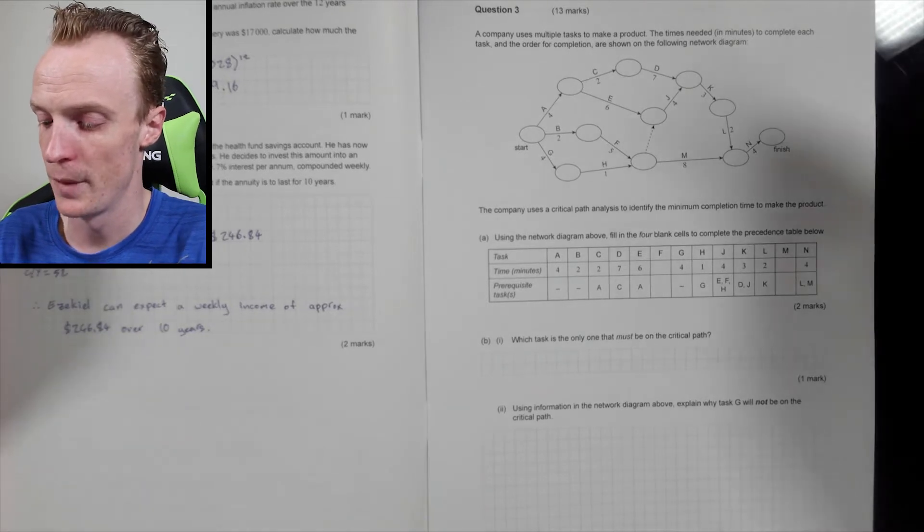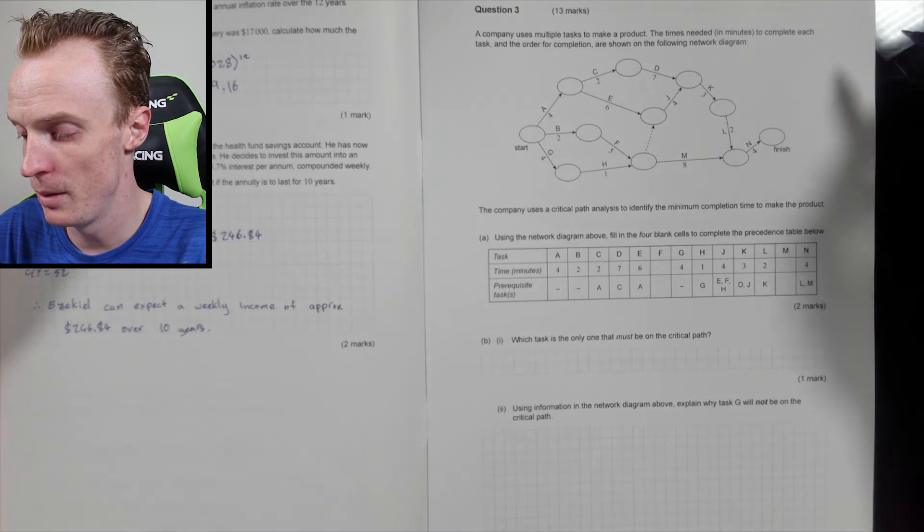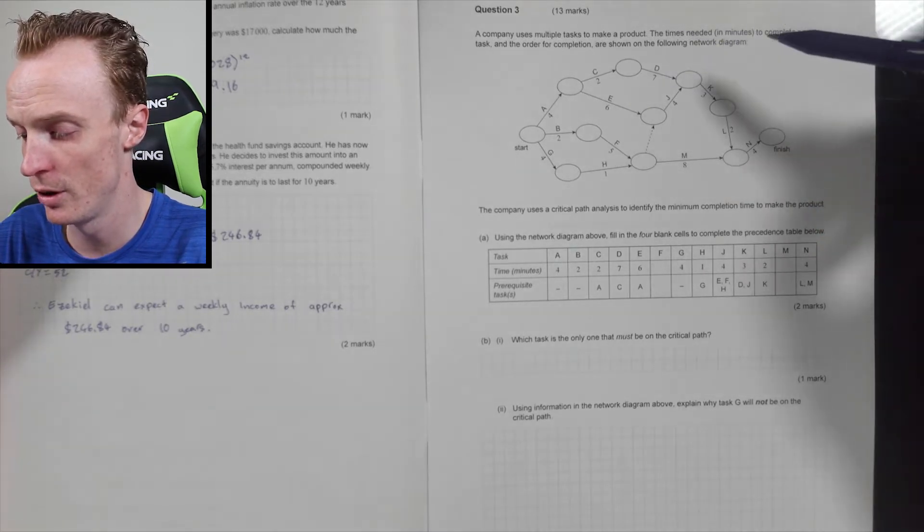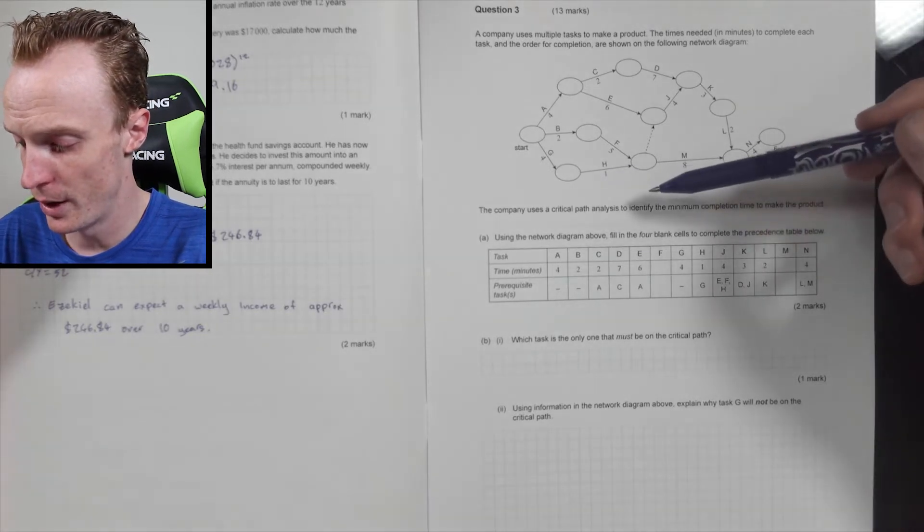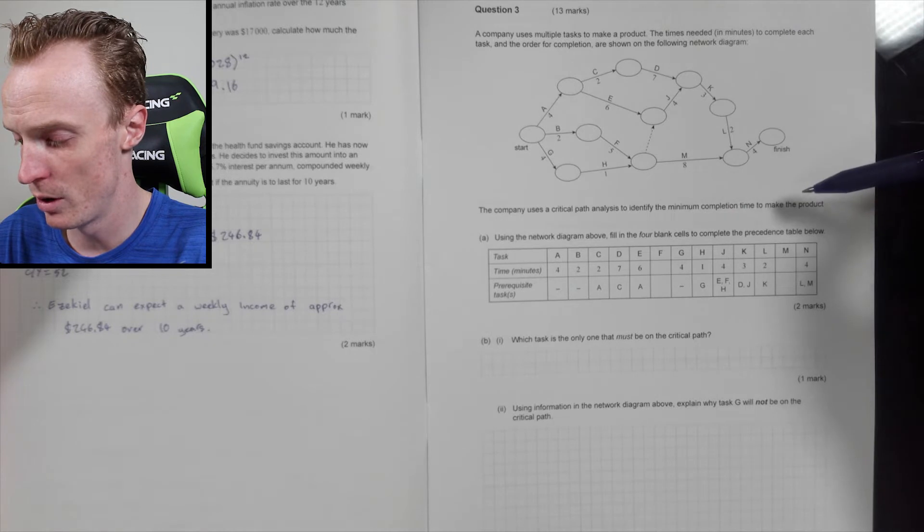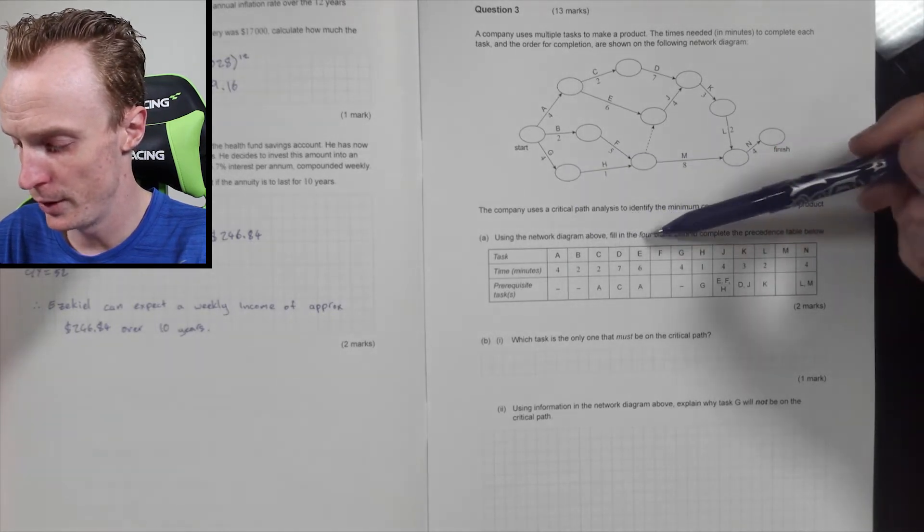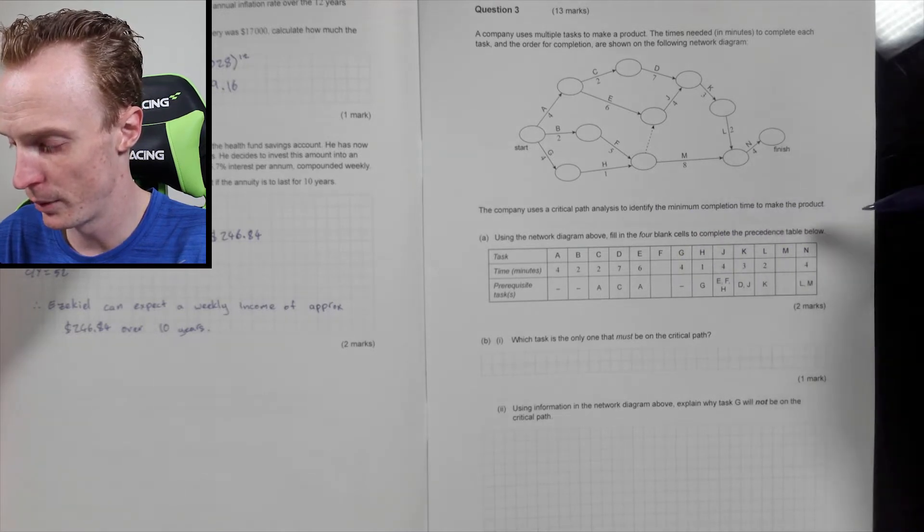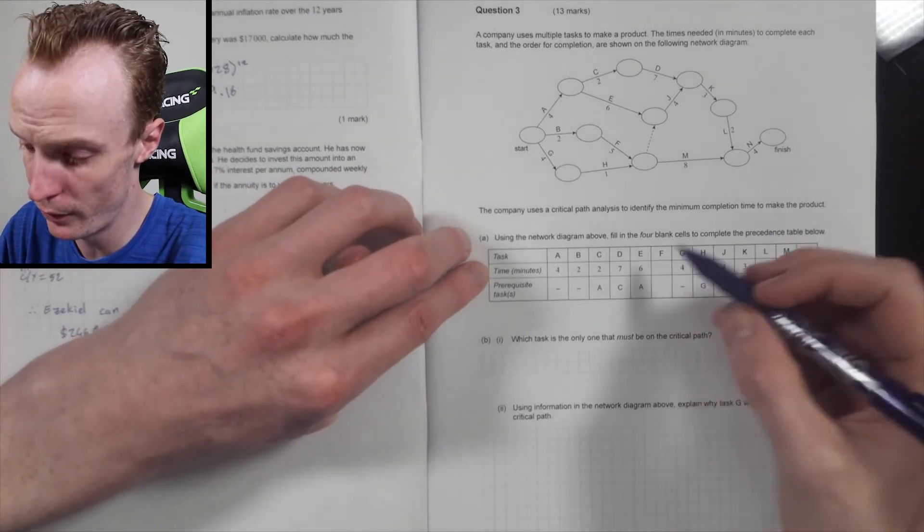Alright, so on to question 3. A company uses multiple tasks to make a product. The times needed in minutes to complete each task and the order of completion are shown in the following network diagram. The company uses a critical path analysis to identify the minimum completion time to make the product. Using the network diagram above, fill in the four blank cells, so they'll be these four, to complete the table below.